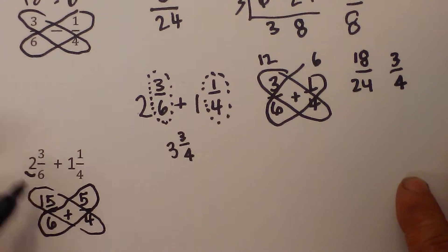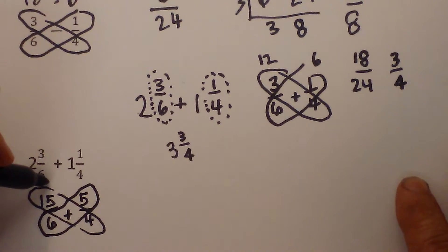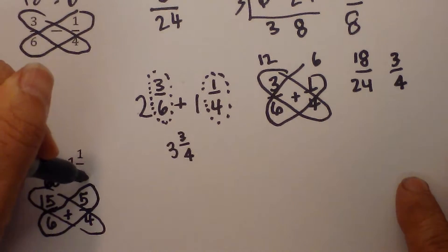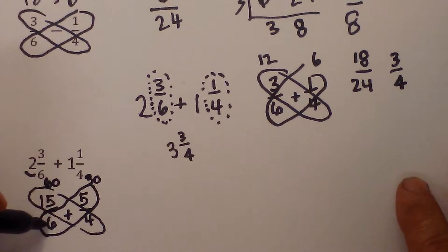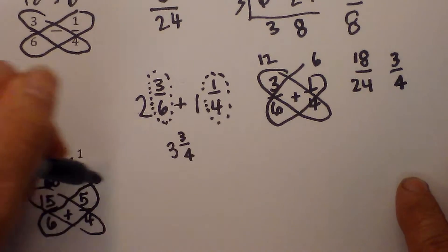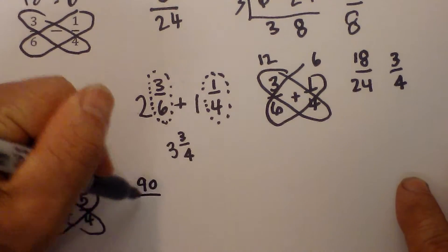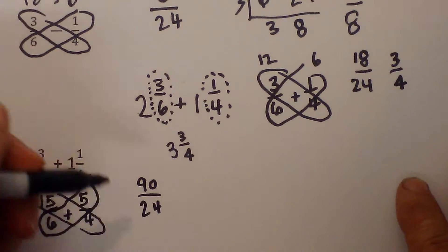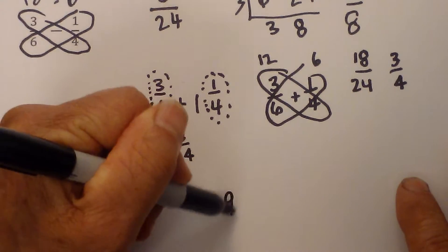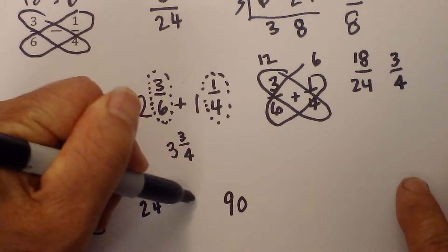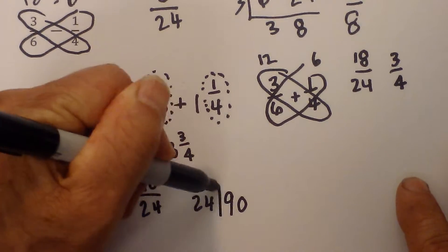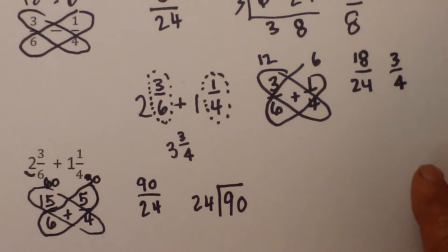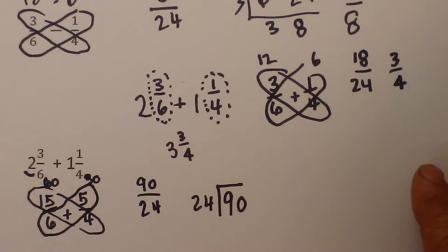And so we have 4 times 15 is 60, 6 times 5 is 30. We will add 60 plus 30 is 90 over, multiply the two bottom fractions, 6, 12, 18, that is 24. I then reduce this because I have 90 divided by 24. 24 goes into 90, let's see here, we will go 3 times.